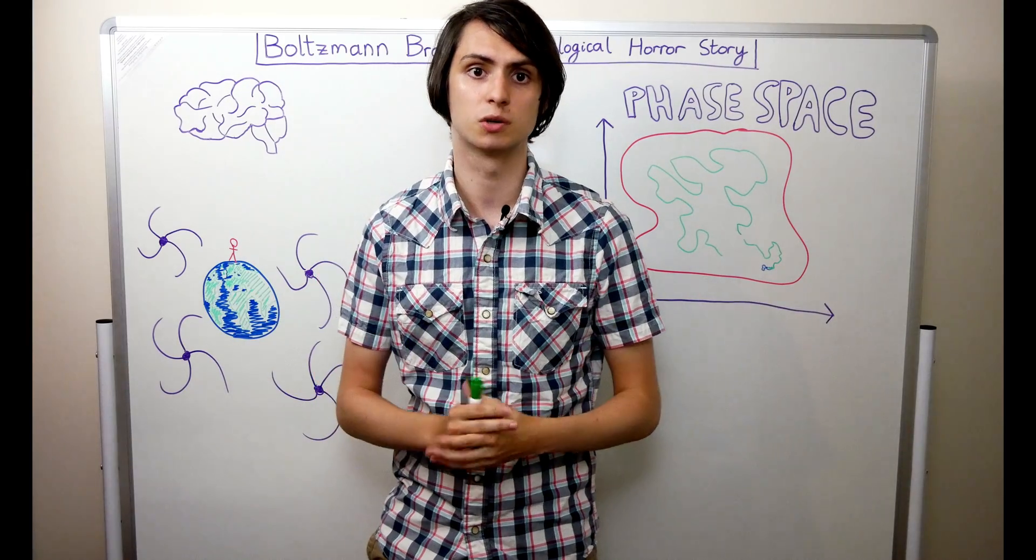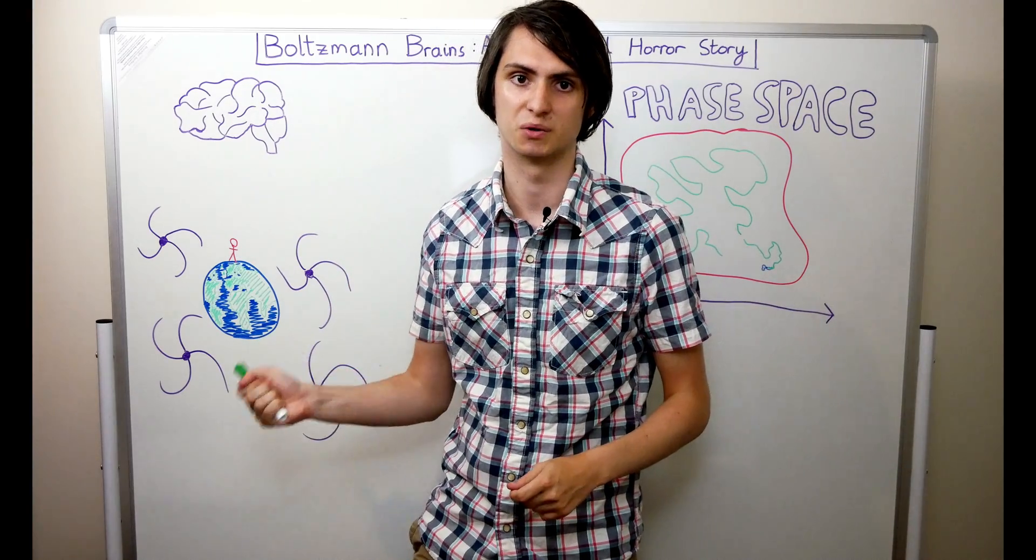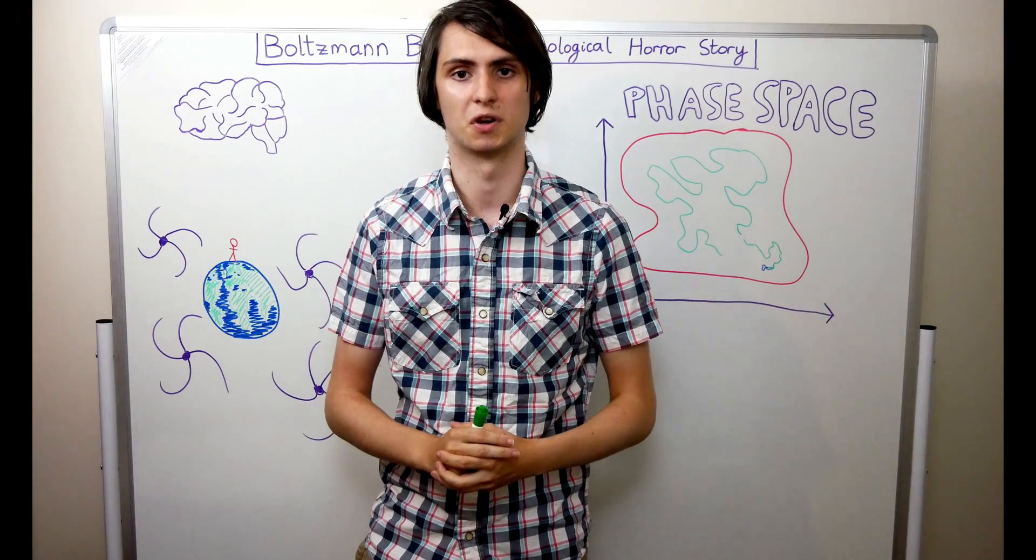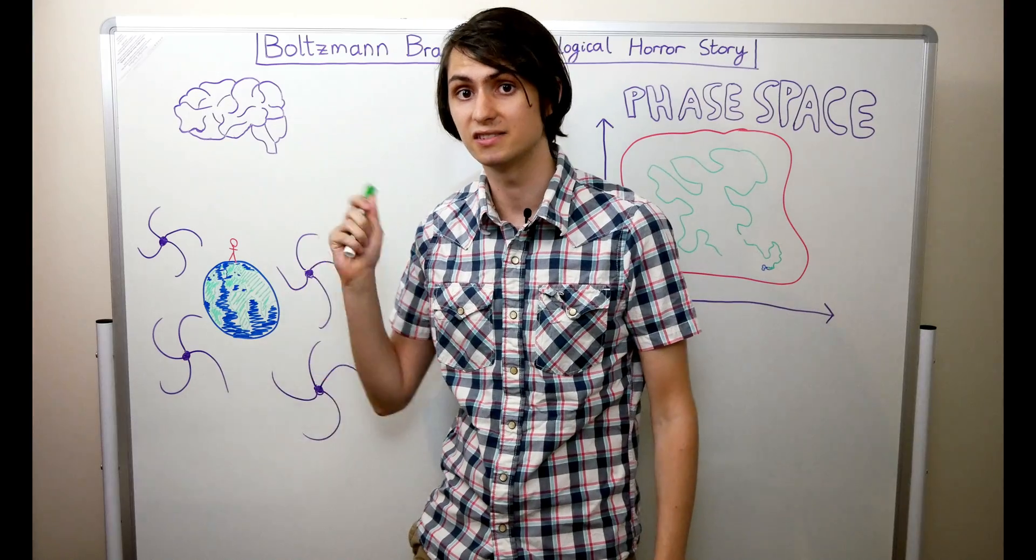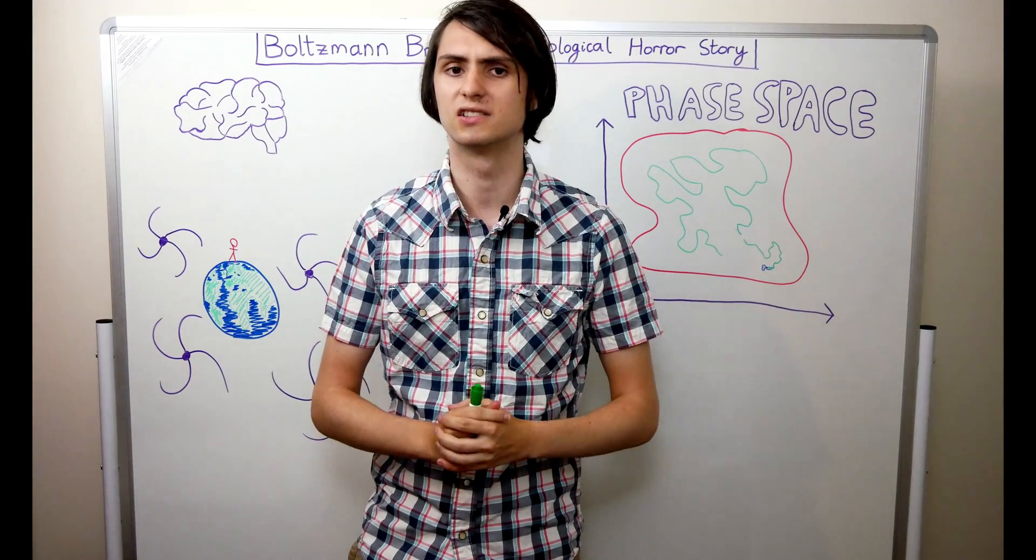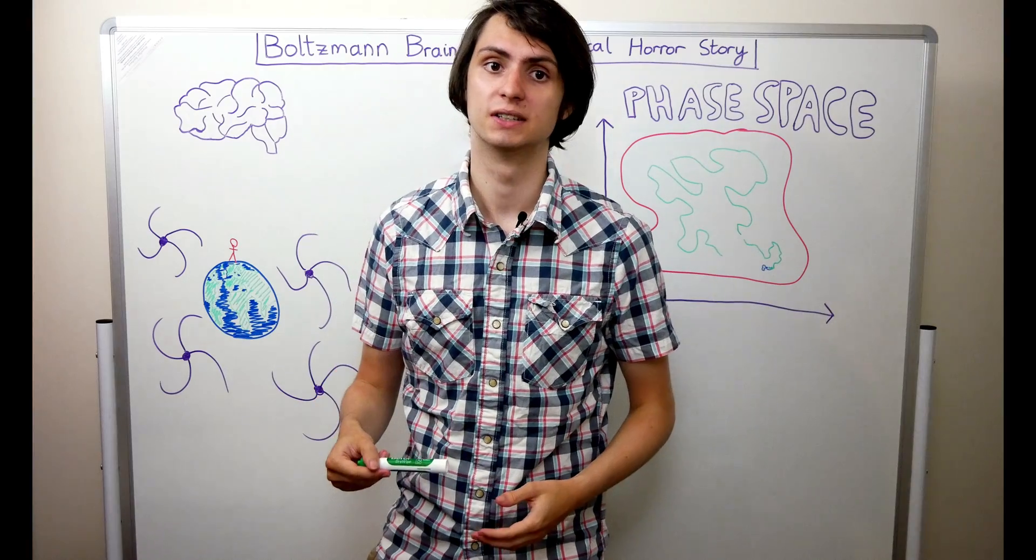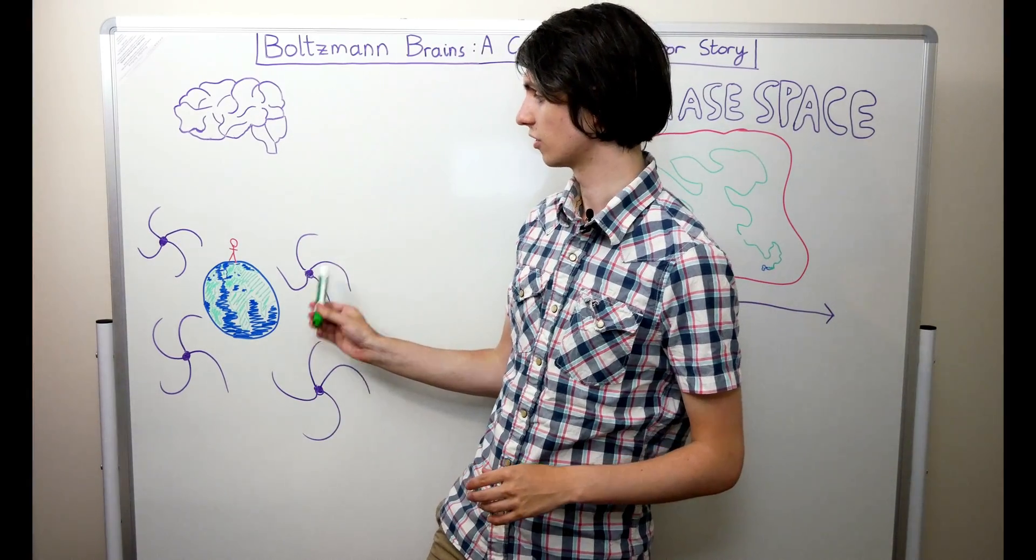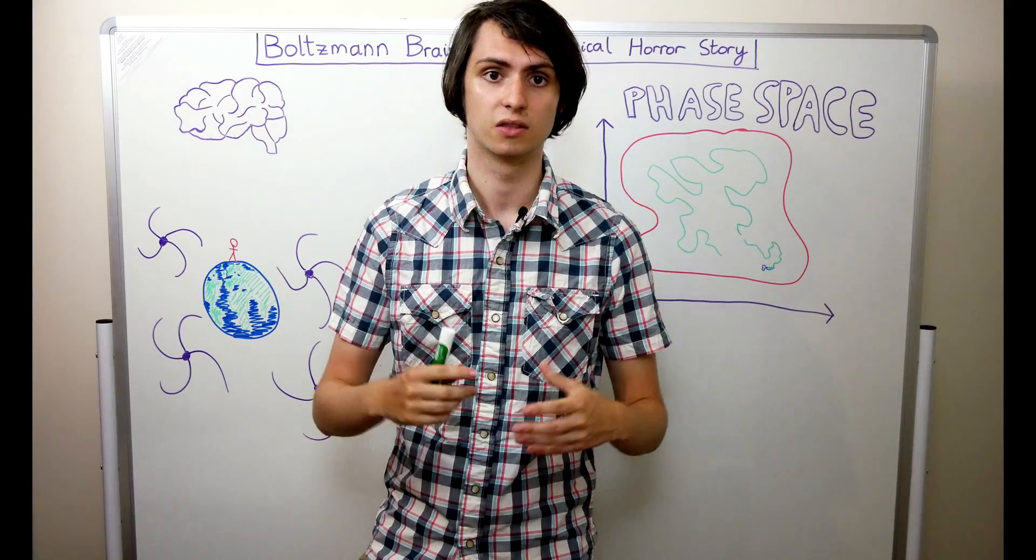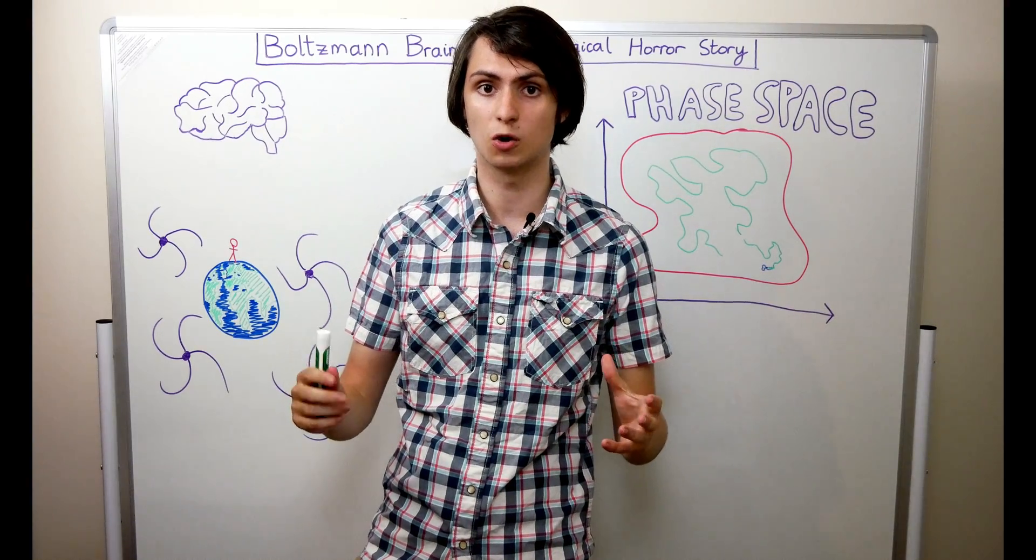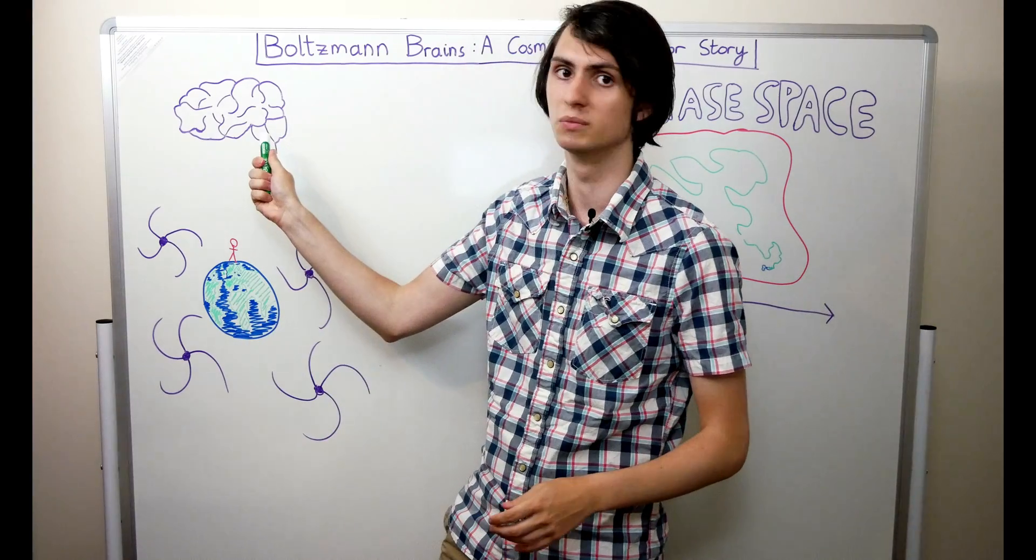If universes with conscious observers are formed from statistical fluctuations, then it is much more likely for a single galaxy to fluctuate into existence than it is for an entire observable universe to fluctuate into existence. For every universe like ours, there should be millions more that consist of just a single galaxy. So why are we in such a large universe? The problem gets even worse though, since you can repeat this argument several times over. It's far more likely that a single galaxy fluctuates into existence than a whole observable universe, but it's also far more likely that a single solar system fluctuates into existence than a whole galaxy. Far more likely that just a single planet forms than a whole solar system. And finally, far more likely that just a single brain forms than a whole planet.